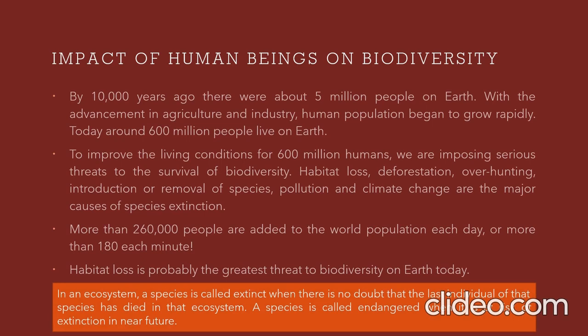By 10,000 years ago, there were about 5 million people on Earth. With the advancement in agriculture and industry, human population began to grow rapidly. Today, around 6 billion people live on Earth. To improve living conditions for this population, we are imposing serious threats to the survival of biodiversity. Habitat loss, deforestation, overhunting, introduction or removal of species, pollution, and climate change are the major known causes of species extinction.